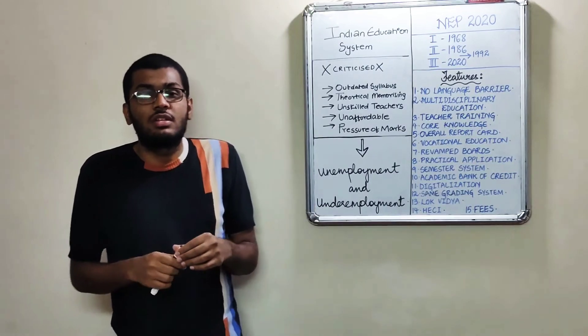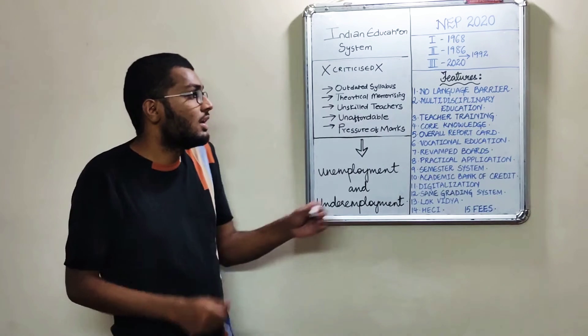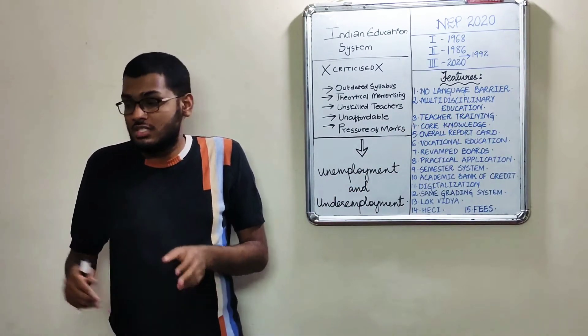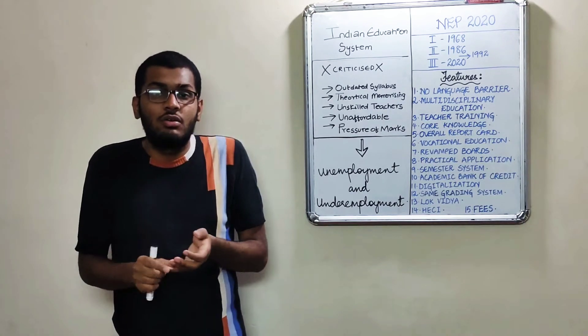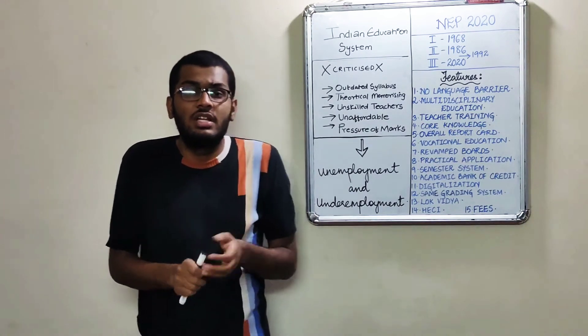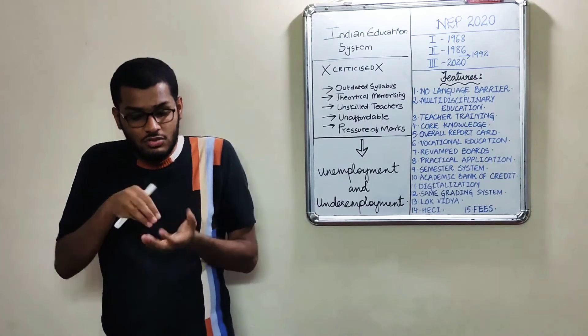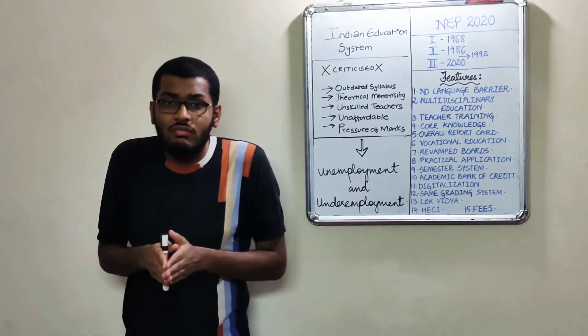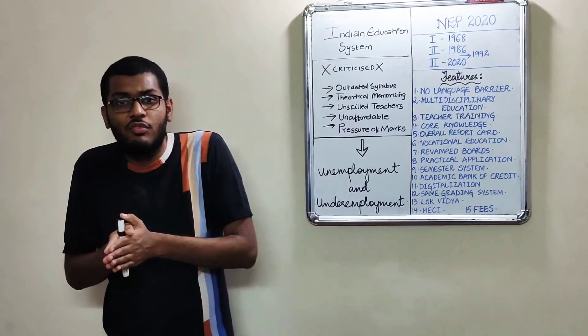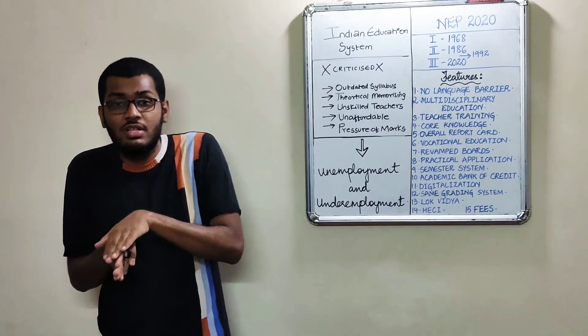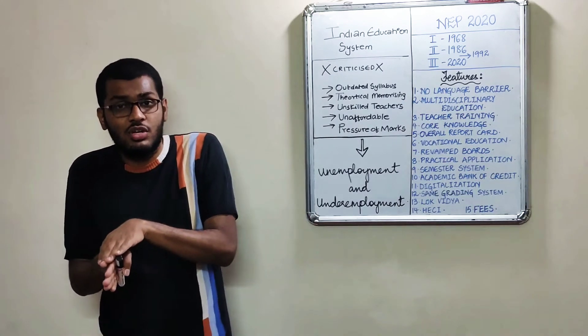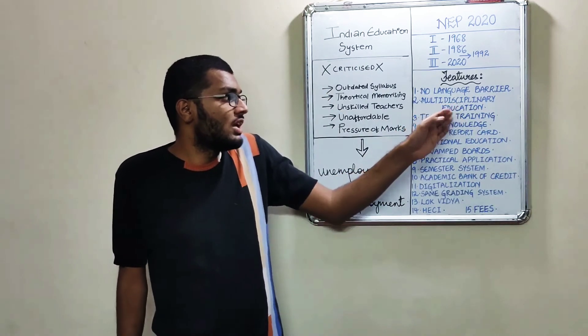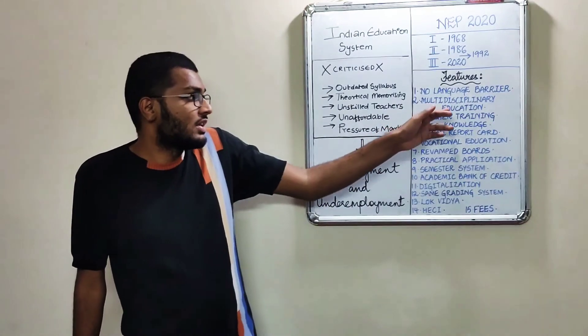Number two is multidisciplinary education. Multidisciplinary education is a concept where, for example, if you're in humanities or science, you can amalgamate according to your interests, rather than going with only one form of subject in which you don't have any interest. But that will come on a very higher level.